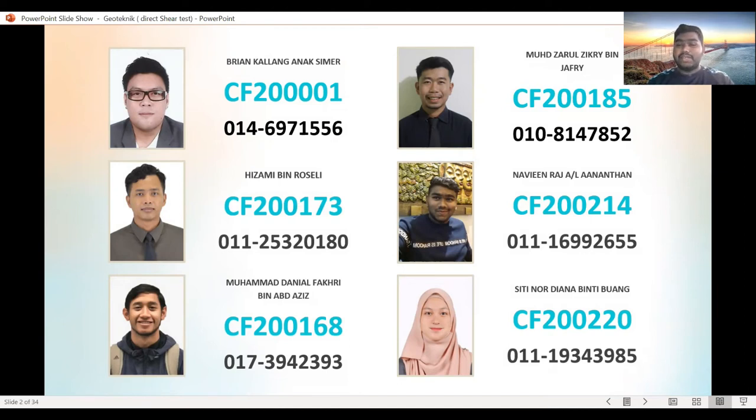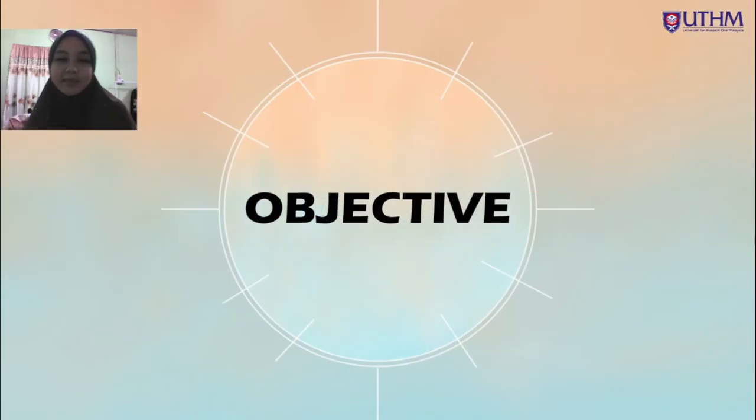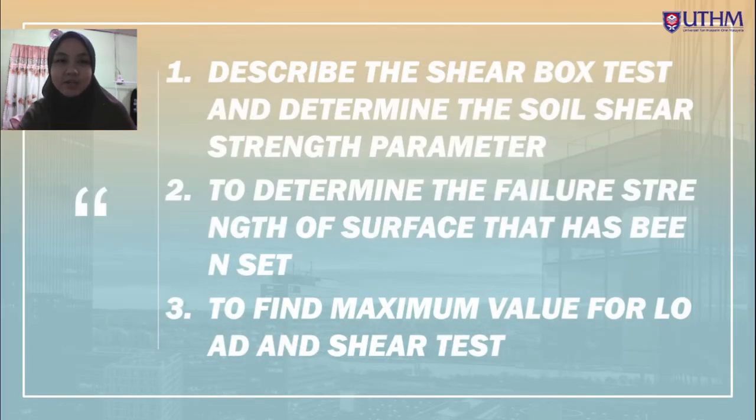The Field Test or Laboratory Test that we choose was Direct Shear Test, which they call Shear Box Test. I will begin with the objective for this test, which has three objectives. The first one is to describe the Shear Box Test and determine the soil shear strength parameter. The second one is to determine the failure strength of surface that has been set. And the third one is to find maximum value for load and shear test.